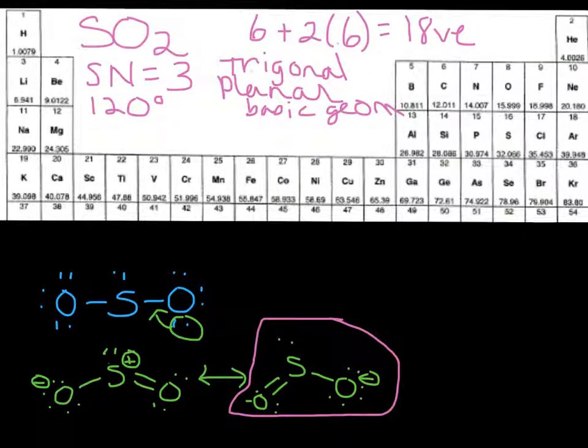And so now let's go ahead and draw this, showing the geometry. So there's our lone pair, and there are our oxygens, approximately 120 degrees. Remember also that you don't absolutely have to show the double bond. If you do, it's fine. If you don't, that's okay too.